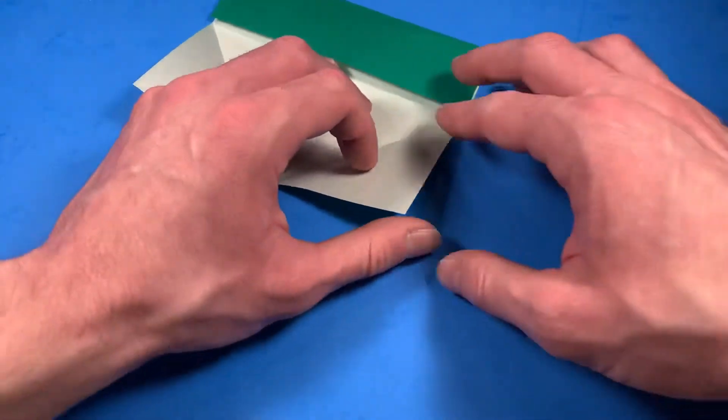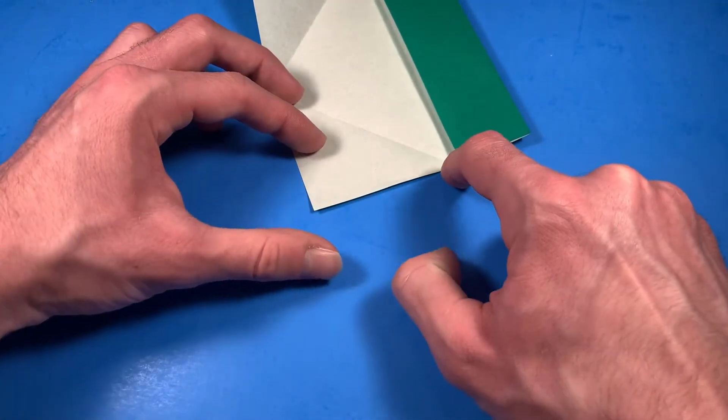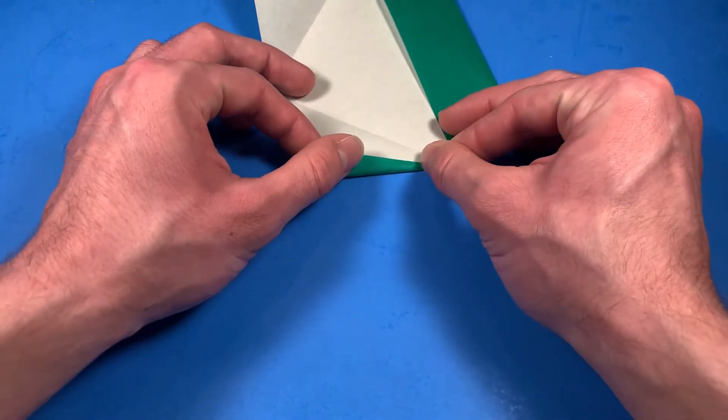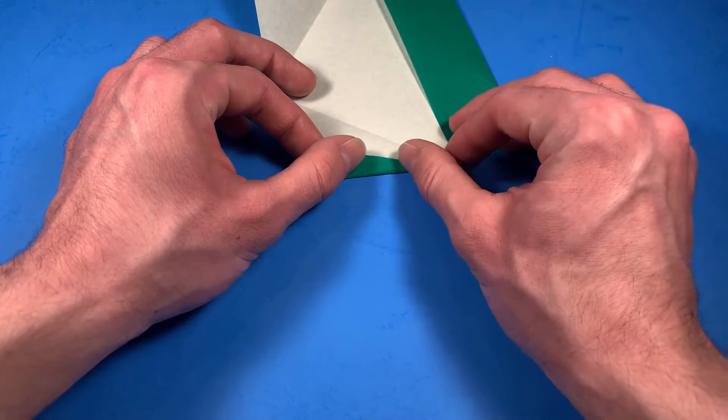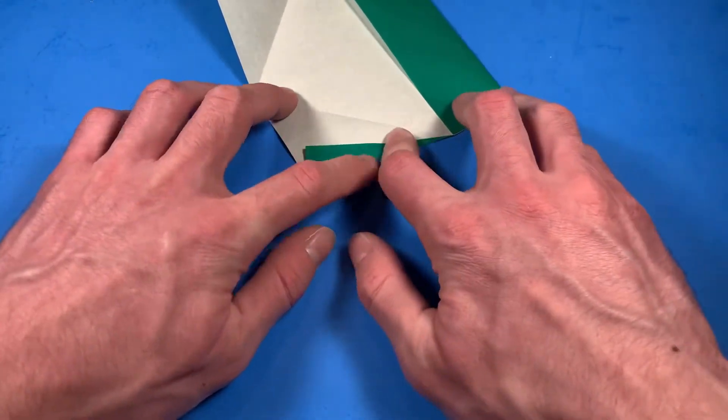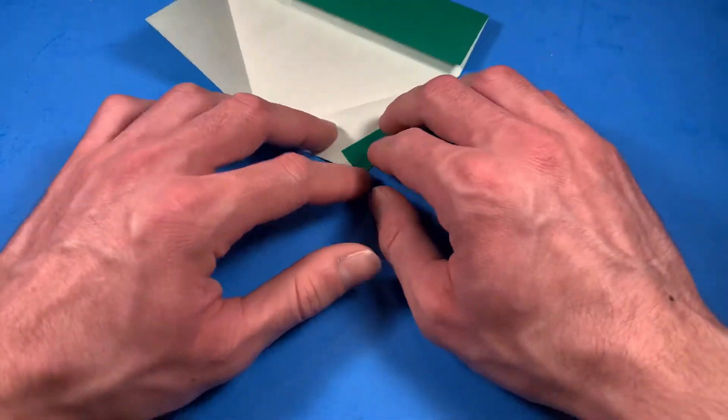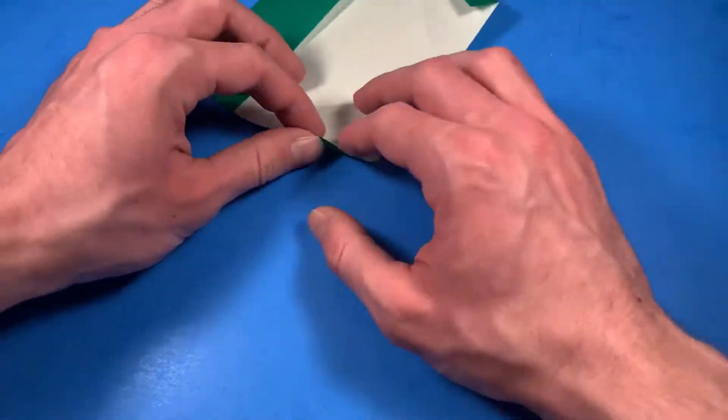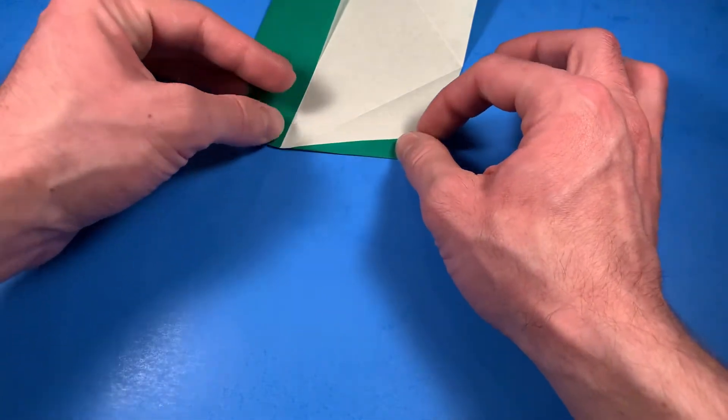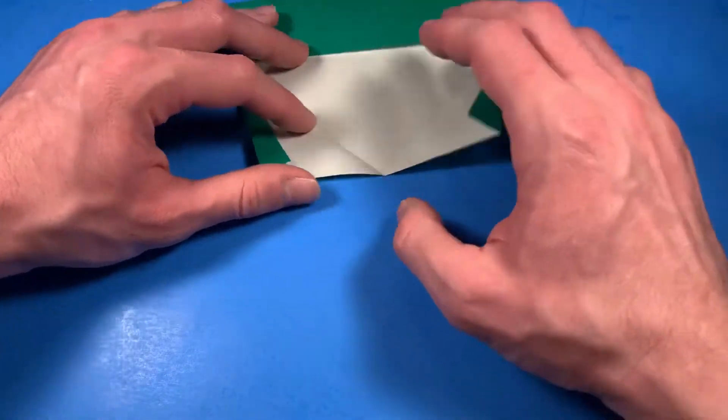And then we're going to take this edge and just fold it in at an angle. So basically we're going to make a fold that starts at this point and then just runs somewhere out to this edge here. And the exact amount isn't important. Basically it's just however big you want the visor to be. So I'm just going to do it in a little ways just like this. And then we're just going to crease. So basically I took this little piece of paper here and brought it in. And then we're going to do the same thing on the other side.